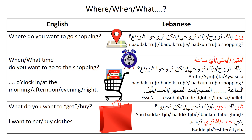To ask 'what time,' use 'ay saaa.' 'Saaa' literally means hour, but 'ay saaa' means what time. So 'ay saaa baddak turoh shopping' for masculine, 'ay saaa baddik turoh shopping' for feminine, 'ay saaa baddkun troohu shopping' for plural. An answer could be 'as-saaa tisaa as-subh' — 9 o'clock in the morning — with the number followed by the time of day.